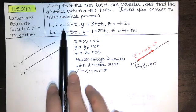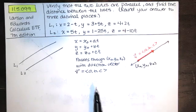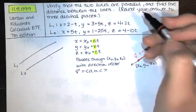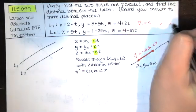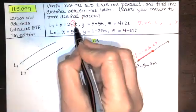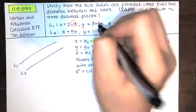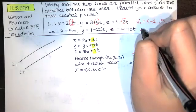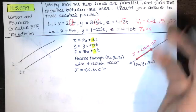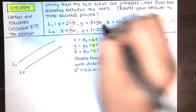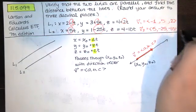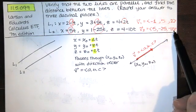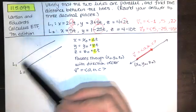To find the direction vector of line one and line two, I just need to look at the coefficients of t in both lines. For line one, the direction vector v1 has coefficients of t equal to negative one, five, and two. The direction vector for the second line is 5, negative 25, and negative 10.